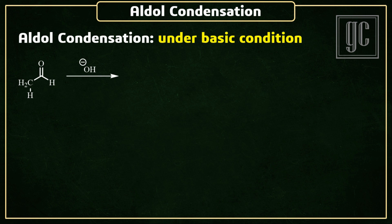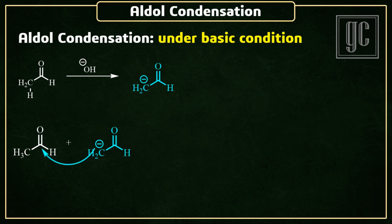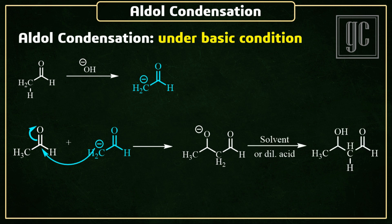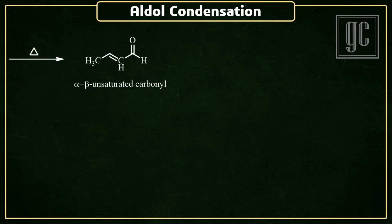Next is aldol condensation under basic conditions. In the presence of a base, one acidic alpha hydrogen is removed from the molecule and a carbanion is formed. Now this carbanion attacks the carbonyl carbon of another carbonyl molecule; as a result, carbon-carbon bond formation takes place. In the end, the beta-hydroxyl group undergoes beta elimination and the final product, alpha-beta unsaturated carbonyl compound, is formed.